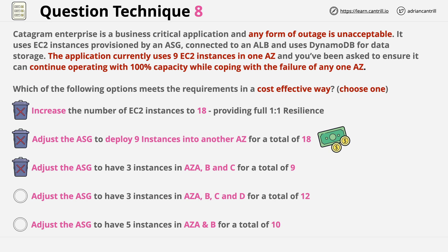The last answer proposes five instances in availability zone A and availability zone B, for a total of 10. This answer is neither the cheapest nor the most expensive, but it doesn't meet the question requirements. If one of those availability zones fails, there are only five instances remaining, which is below the minimum required — so again, this is a wrong answer.